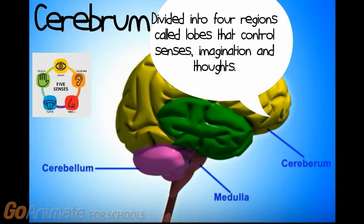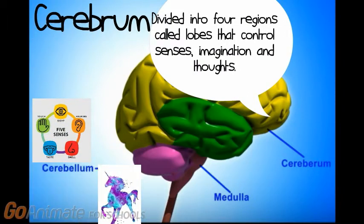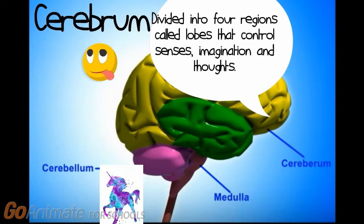The cerebrum is divided into four regions called lobes that control senses, imagination, and thoughts.